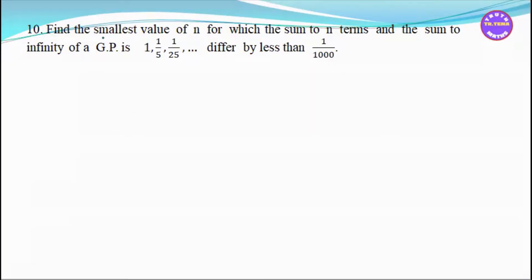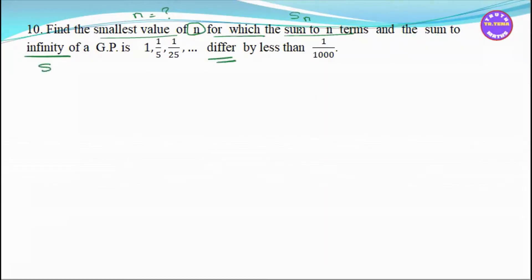Number 10: find the smallest value of n for which the sum to N terms differs from the sum to infinity. The sum to N terms is given, and we compare it to the sum to infinity.